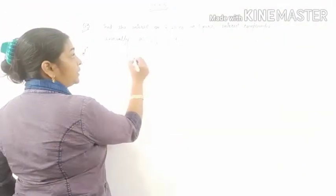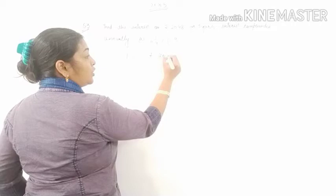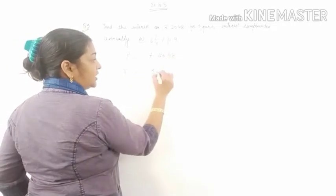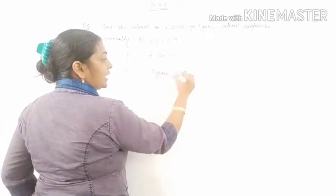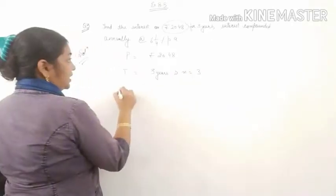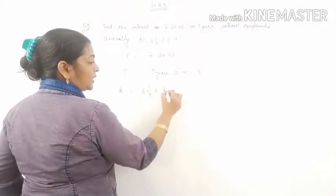So here principle is Rs. 2048, time is 3 years, that means n is equal to 3, rate is 6 and 1/4% per annum.